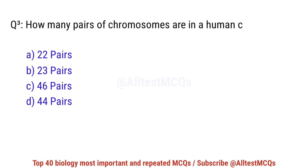Question number 3. How many pairs of chromosomes are in a human cell? The correct option is B: 23 pairs.